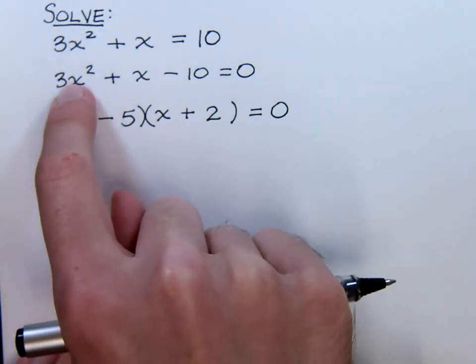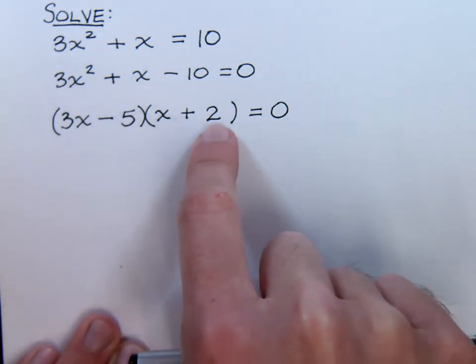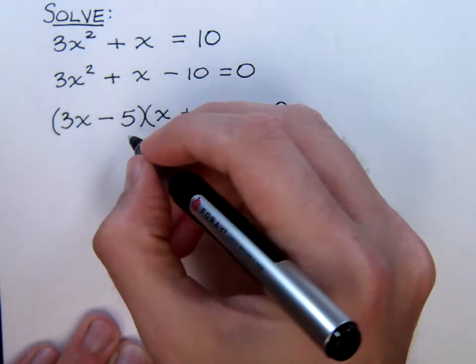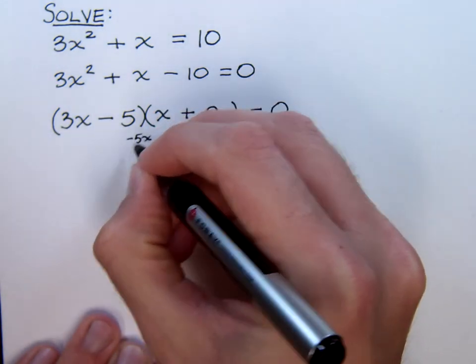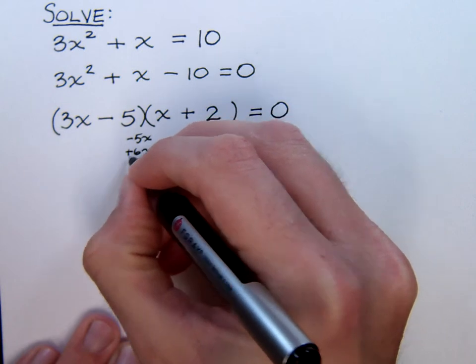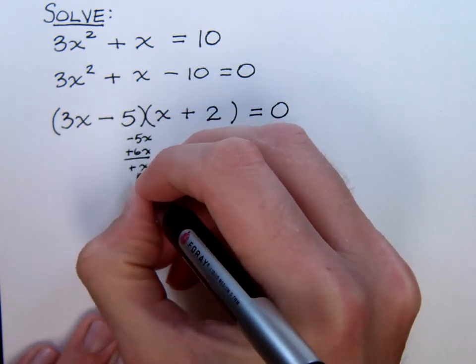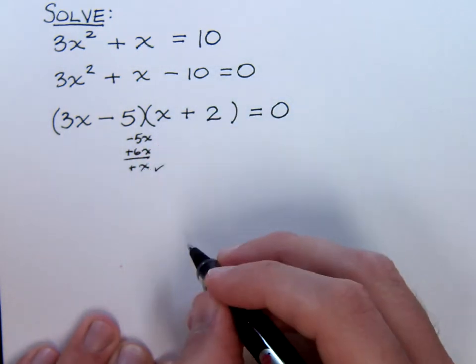3x times x is 3x squared. Negative 5 times 2 is negative 10. On the inside here, we get negative 5x and a plus 6x, which gives me that positive 1x in the middle. So I know that part is okay.